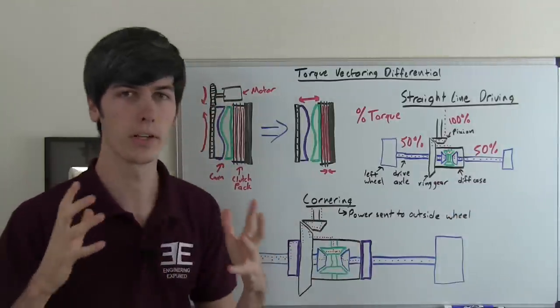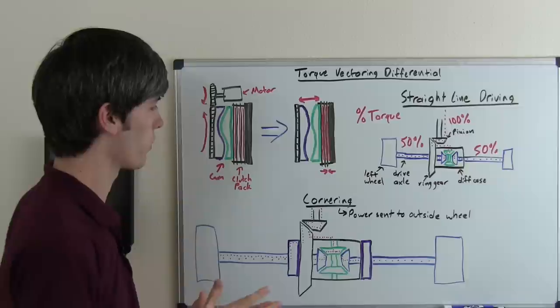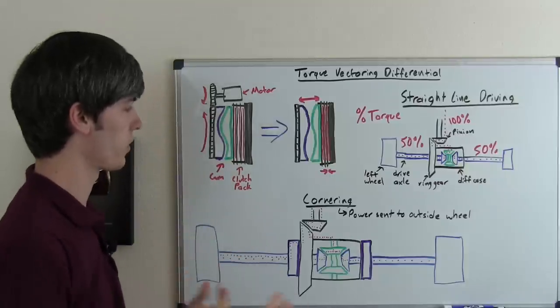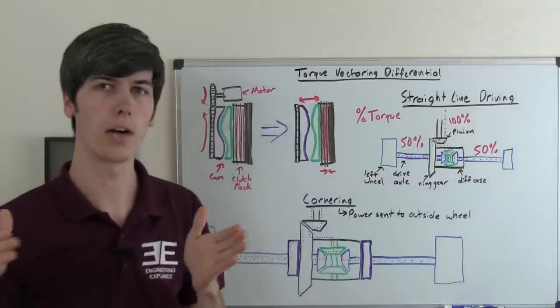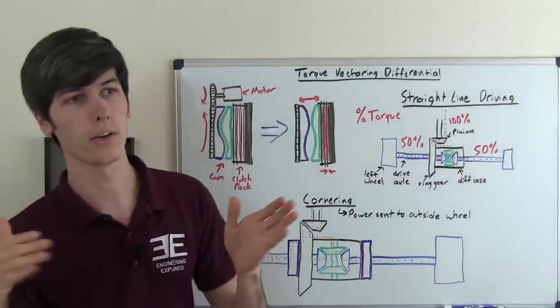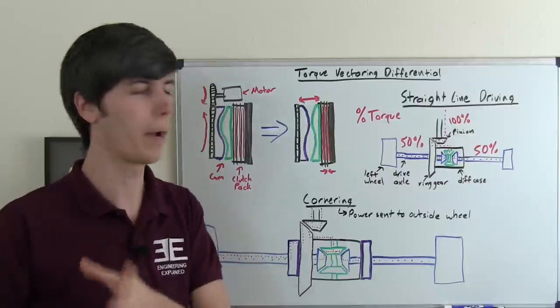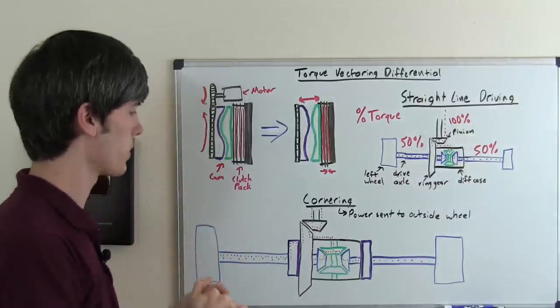Now what happens when you're in a cornering situation differs a bit and this is where power is sent to the outside wheel so if you're going around a corner and you're taking let's say a left-hand corner and you're accelerating out then it'll send more power to that outside that right tire.